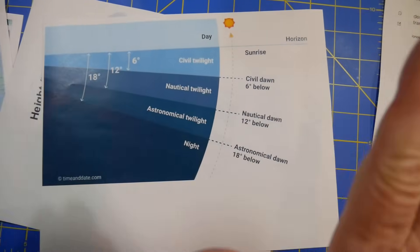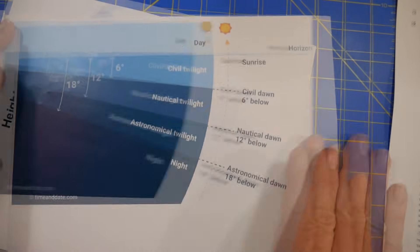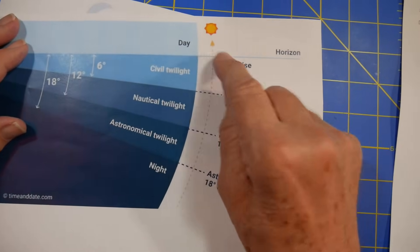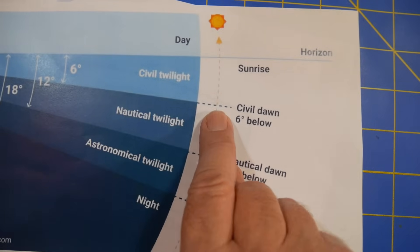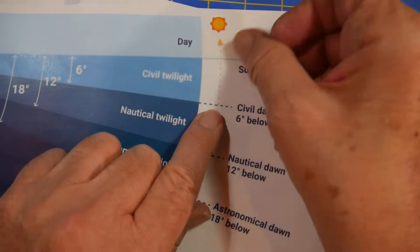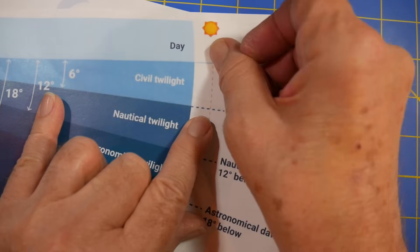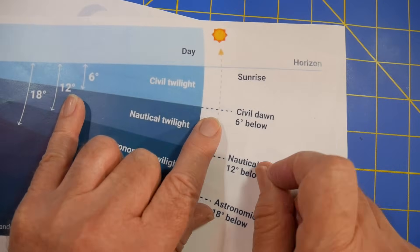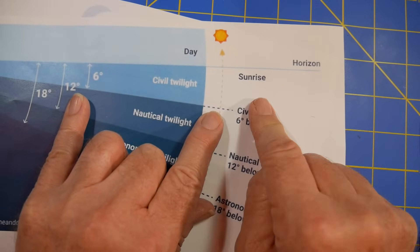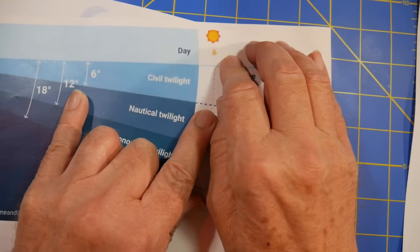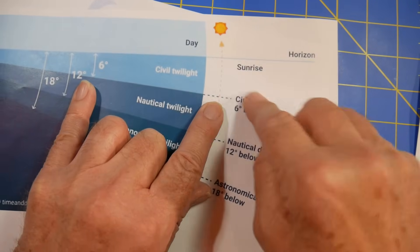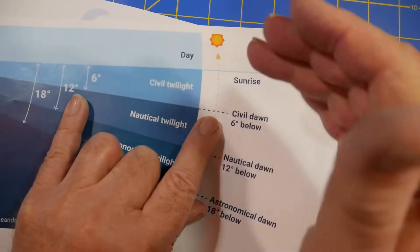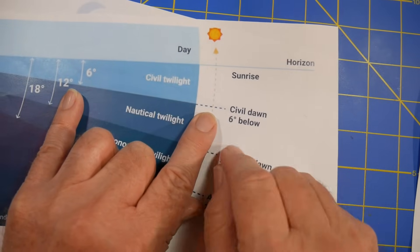Before I jump into why this is important, let me just show you this. There are three versions of twilight. Very few people know this. When the sun is six degrees below the horizon, this distance here, whether the sun is coming up or the sun is going down, is called civil twilight. Civil twilight is defined as the sun has gone down over the horizon, but you can still get around. I mean, you can see, you can read, you can do all the kinds of things that you need to do.